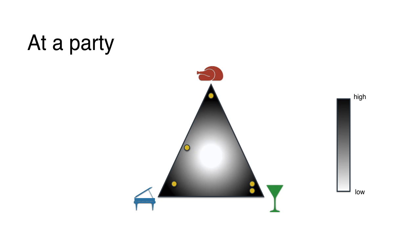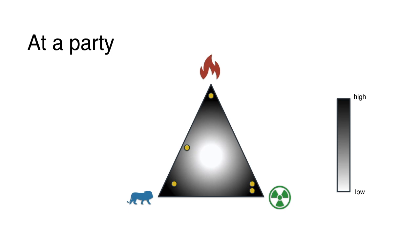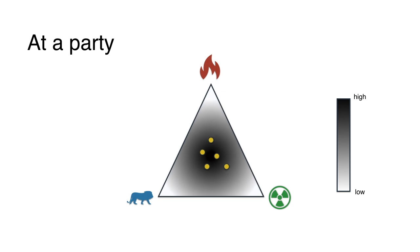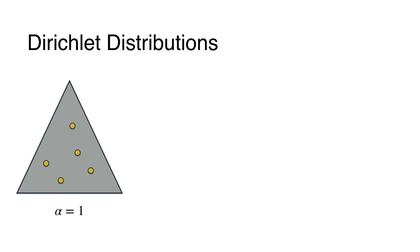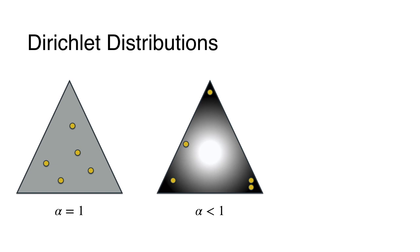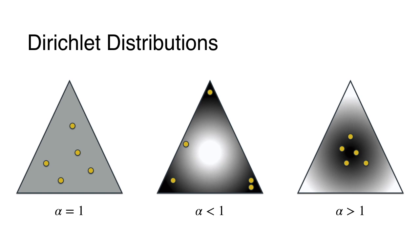What if I made the party even more interesting? I put lions in one corner, radioactive waste in another, and set the third corner on fire. Now people gravitate towards the center — it's much more likely to find a point in the center than near the corners. These are all examples of Dirichlet distributions. Dirichlet distributions have a parameter alpha: when alpha equals one we have the uniform party; when alpha is less than one, people tend to roam toward the corners; when alpha is greater than one, people tend toward the center.